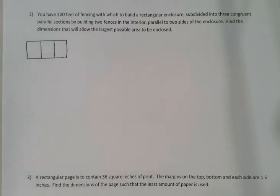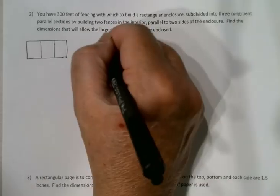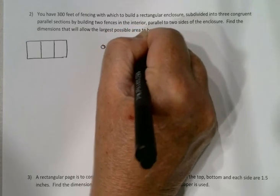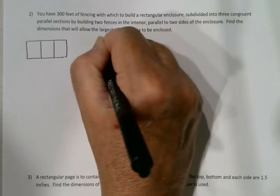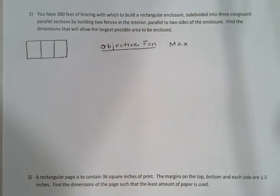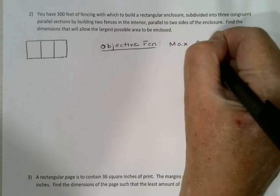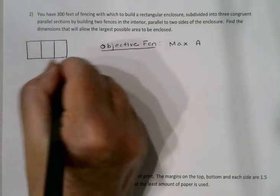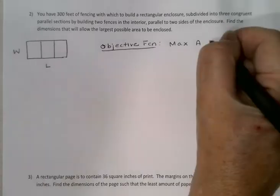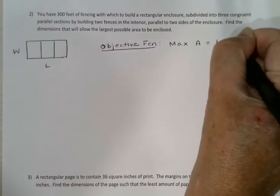Ultimately I want to have the largest possible area. So once again my objective function, I want to maximize area. And if I call this length L and that width W, once again my area is length times width.